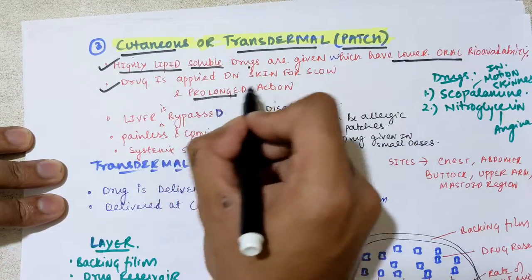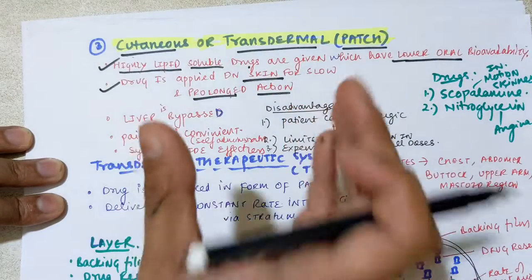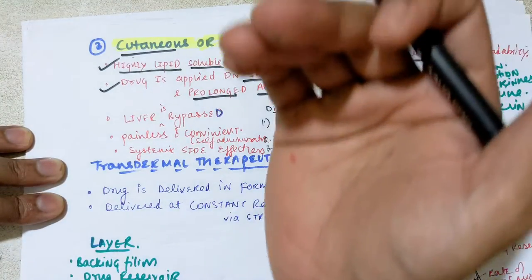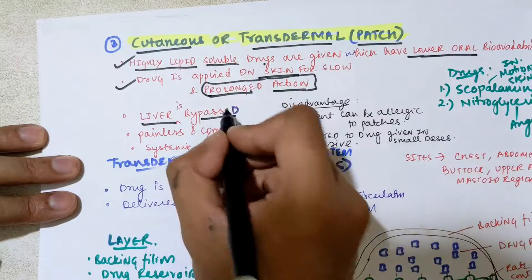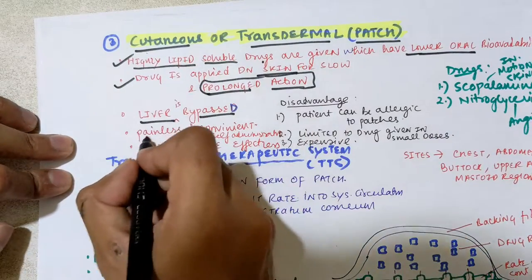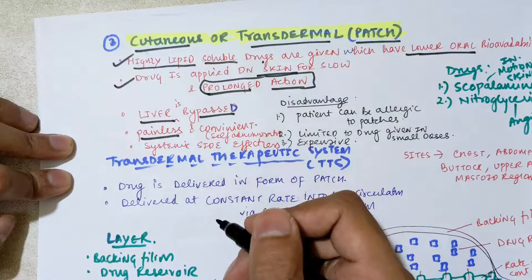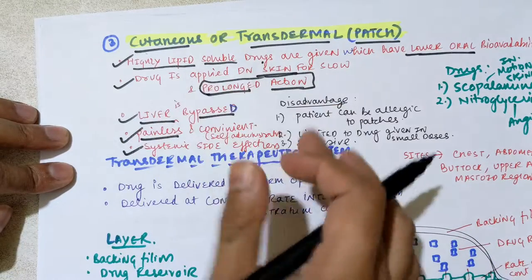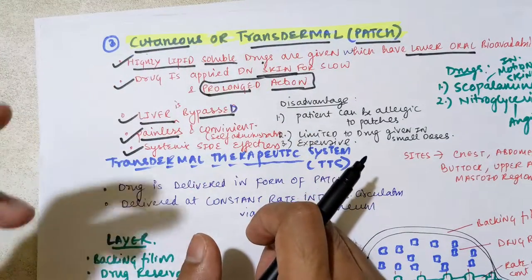The drug is applied on the skin for slow and prolonged action. From the patch, the drug is released at a constant, very slow rate and can show its effect for around one to three days or even weeks. The liver is bypassed since it is a parenteral route, so there is no first pass metabolism. The route is also painless — you simply put the patch on the skin — and it allows self-administration by the patient. Systemic side effects are less since the drug is directly absorbed through the skin.